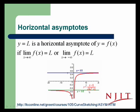For the function in this figure, y equals x minus 1 over the square root of 4x plus 1, as x gets large, as x goes toward plus infinity, the value of the function gets very close to one-half. So we say y equals one-half is a horizontal asymptote.